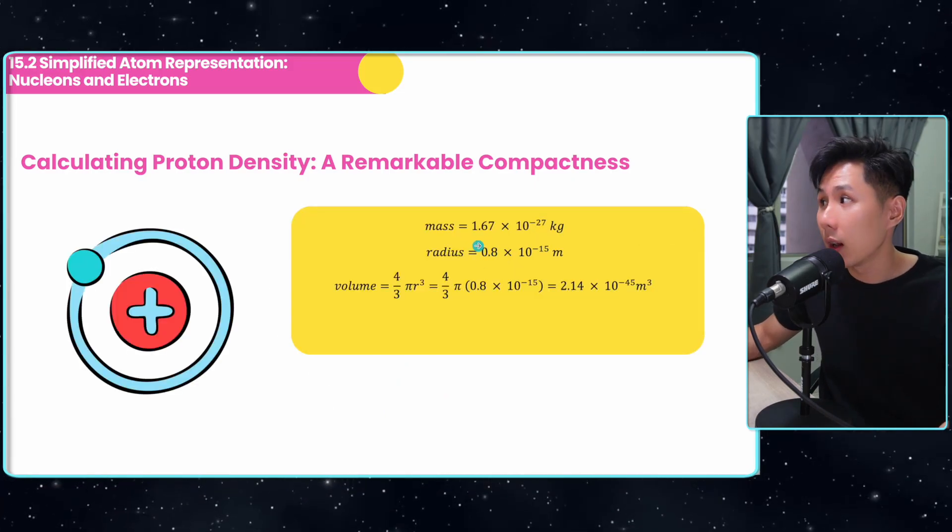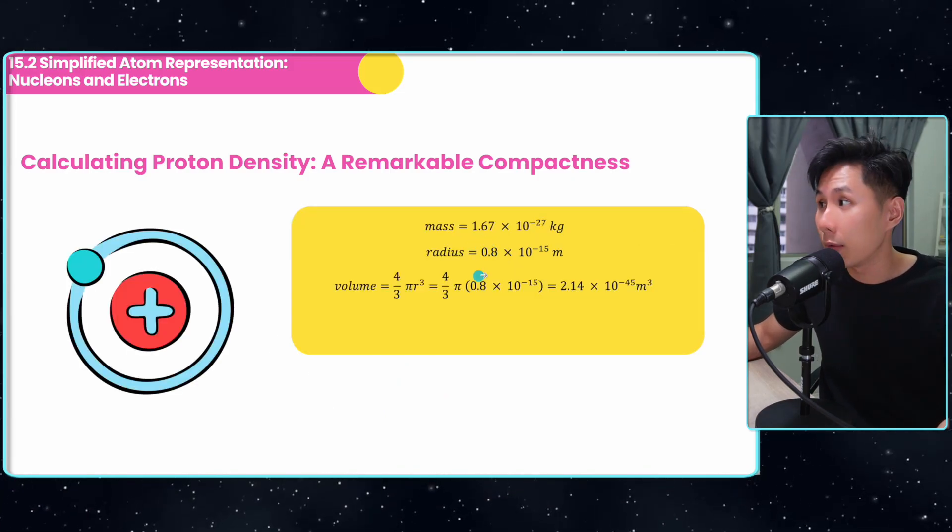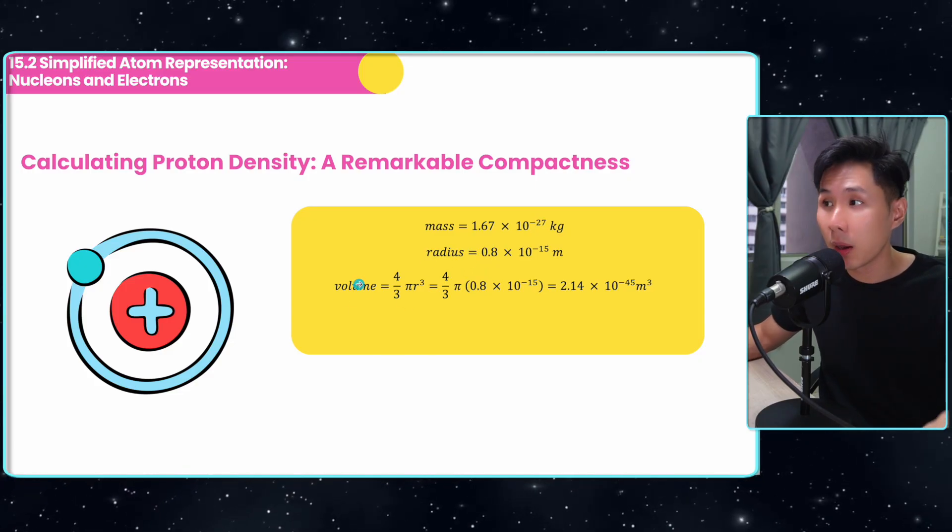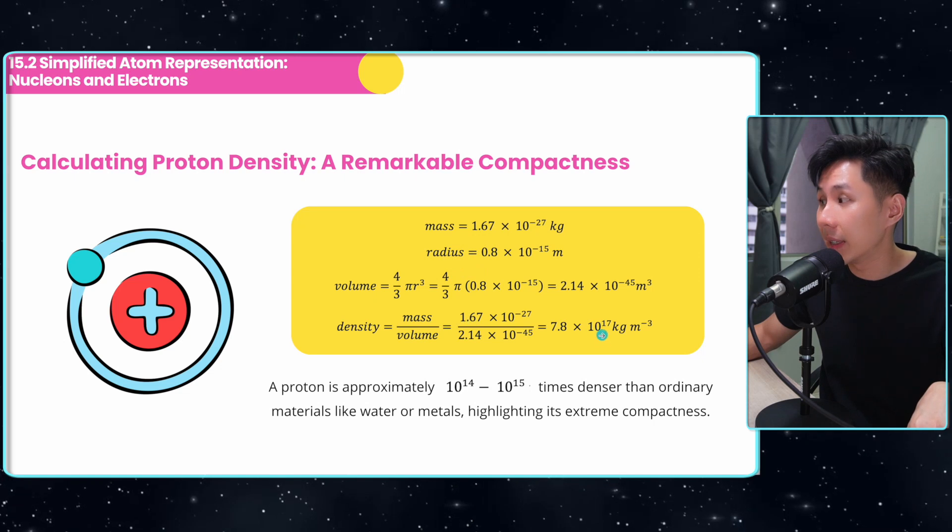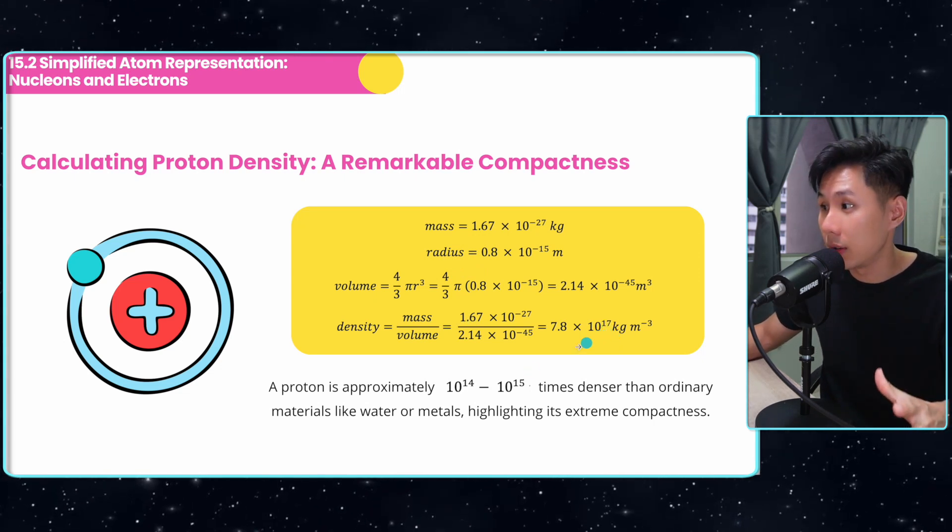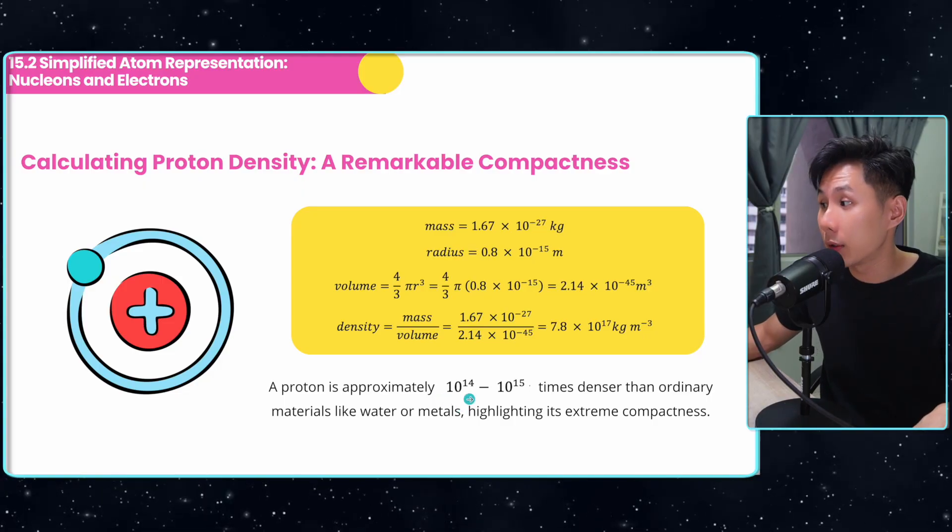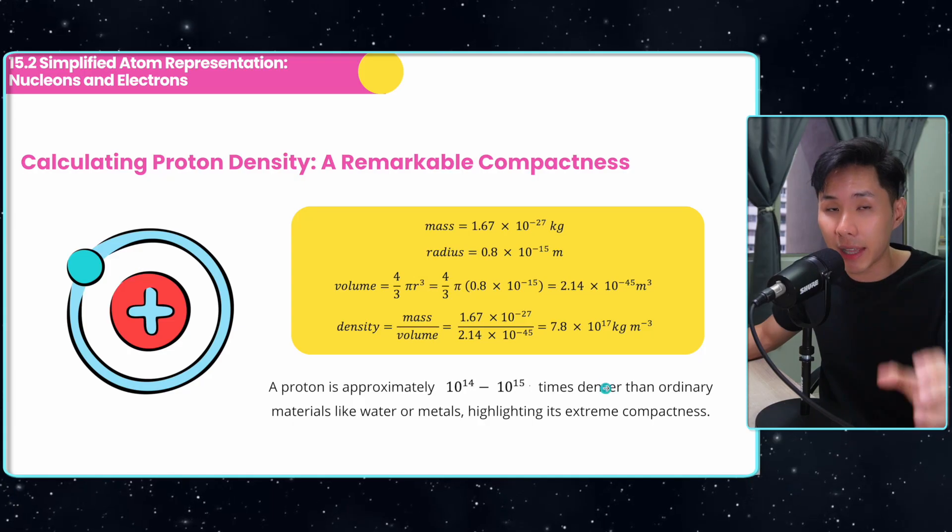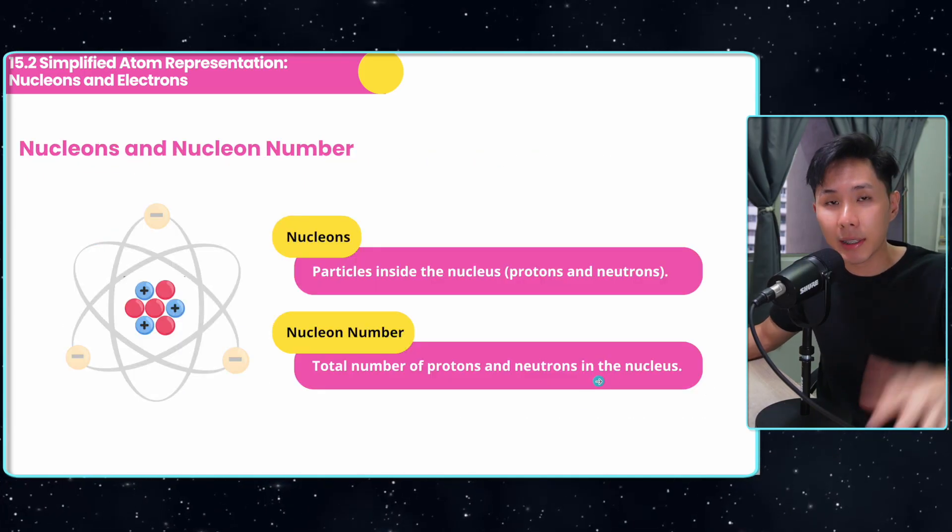Now calculating proton density. We know the mass of the proton and the radius of it. We can use the radius to calculate the volume, which will help us figure out the density of a single proton. As you can see here, the number is very huge. The proton is approximately 10^14 to 10^15 times denser than ordinary objects. So they are very dense particles.